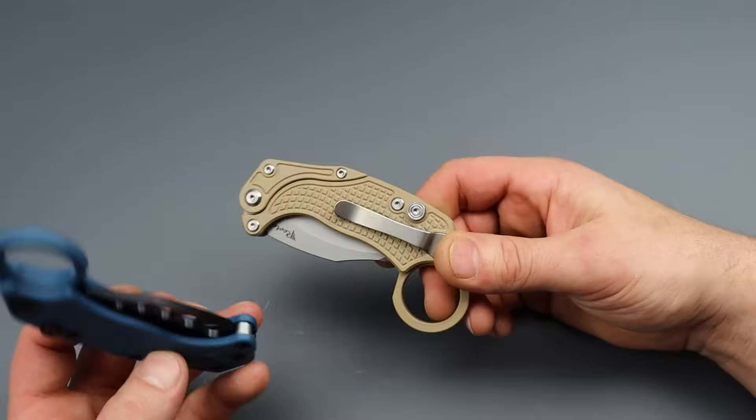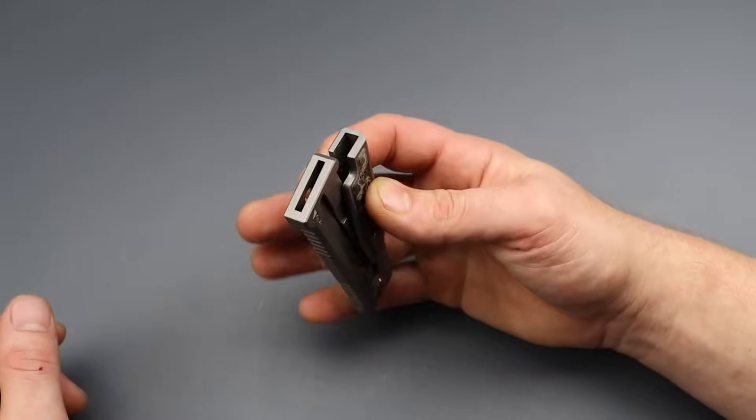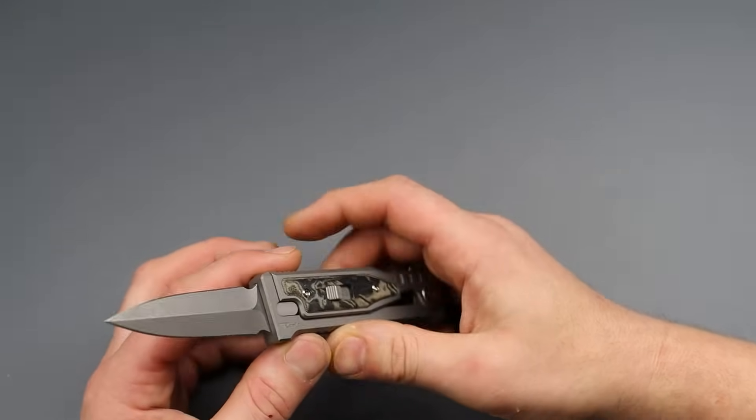But there always is that level of threat when it comes to any type of folding knife that's a self-defense knife. But anyways, they're linked down in the description. These things, they usually sell out pretty quick. So I think they are in a couple locations right now. And also, just so you guys know, the minis are available as well.